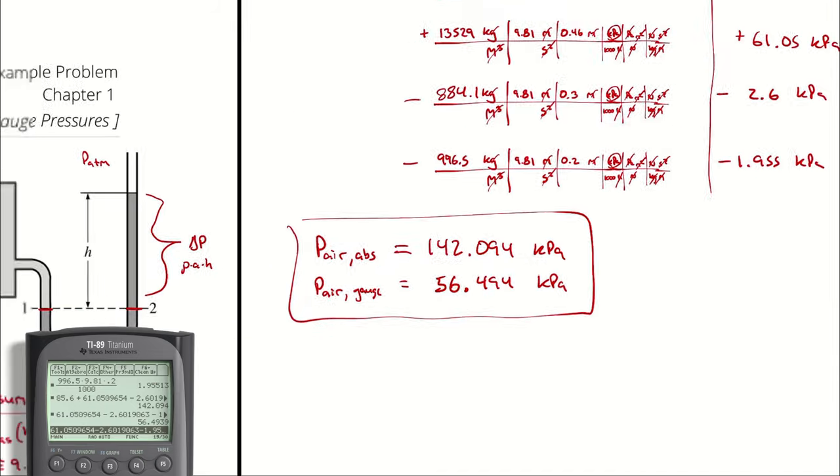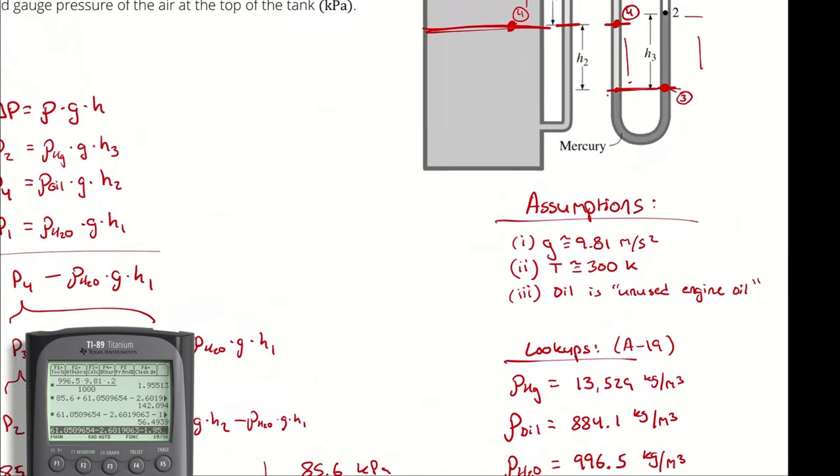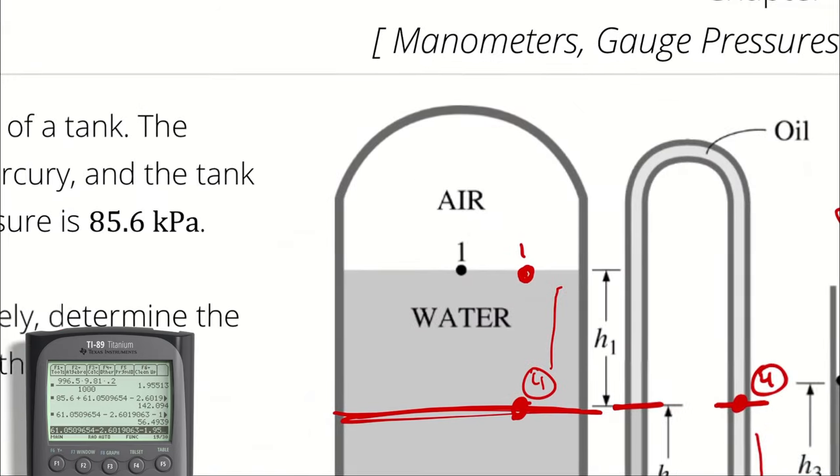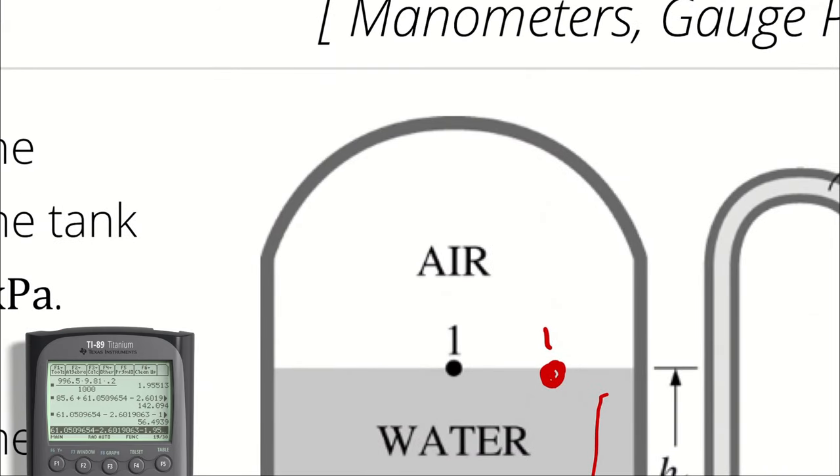So, the logic here is the pressure at the interface between air and water, which is P1, is going to be sufficient for an answer because we are neglecting the pressure changes across the height of the column of air between state 1 and wherever the pressure gauge might be. And, if a pressure gauge were to be read here, it would indicate the pressure difference between the air and atmosphere, because that's how those pressure gauges work, and we would get a readout of 56.5.